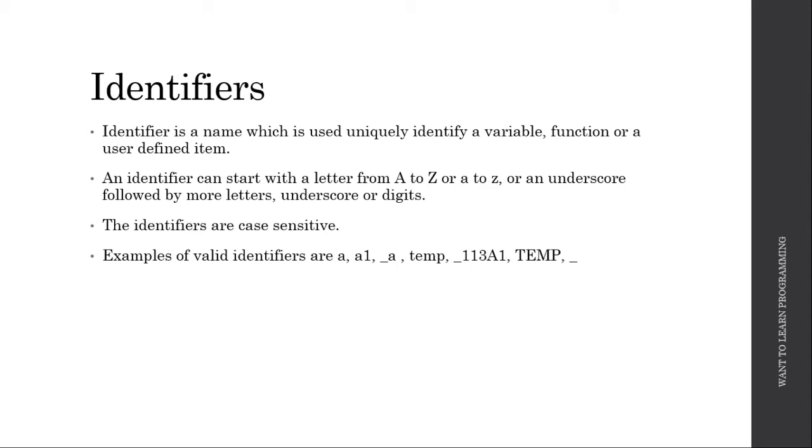Some examples of valid identifiers are: a, a1, _a, temp, _113a1, TEMP, and underscore.